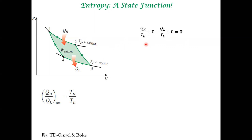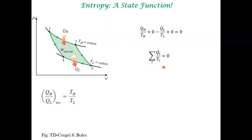It looks like we have a quantity which can be defined as Q divided by T, where T is the temperature at the boundary — the same within the system and just outside, which is the temperature of the reservoir. This quantity can be summed up across the four parts of the cycle, and when you do so, that sum adds up to zero. For the adiabatic parts, Q is zero, so Q/T is also zero. Summing Q/T across all four parts of the cycle gives zero.